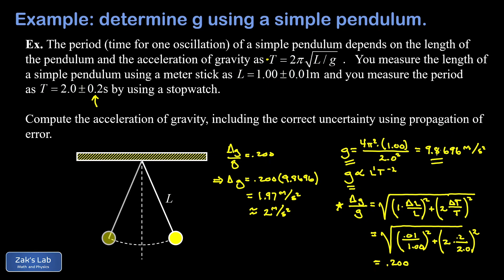In other words, to the ones place. Well, when we do this to 9.8696, we simply get 10. So I'm going to write our final answer as g equals 10 plus or minus 2 meters per second squared. And we're done.